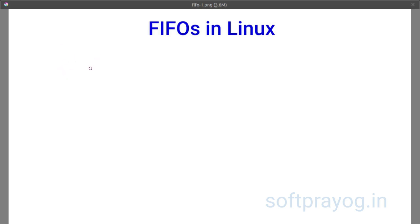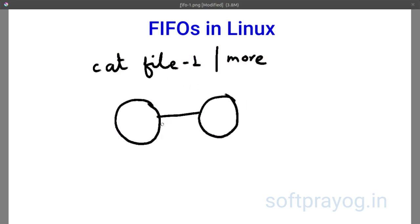In an earlier video on pipes we have seen that we can connect commands in a pipeline like cat file1 pipe to more. The vertical bar is the pipe symbol. The standard output of the cat process becomes the standard input for the more process.